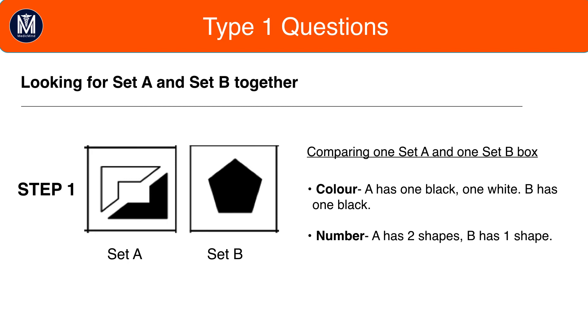That was method one. Method two is looking for Set A and B together. So, we've taken the simplest box in Set A and the simplest box in Set B. Compare them.